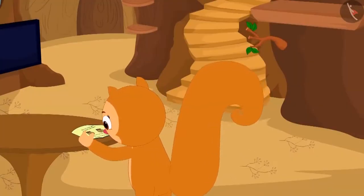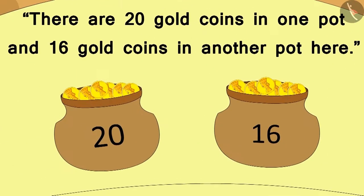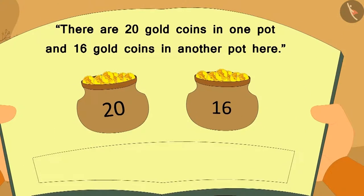This was the first picture in the book. Here, there are 20 gold coins in one pot and 16 gold coins in another pot. And there was a blank space below the picture where a question related to the picture was to be written.